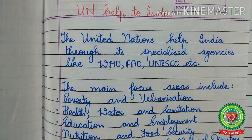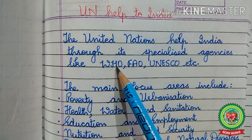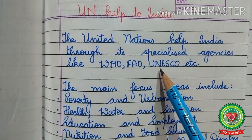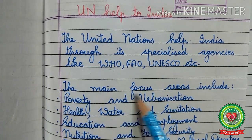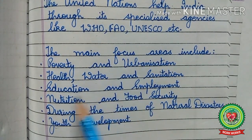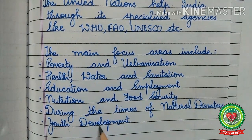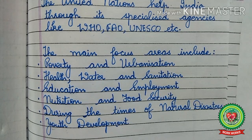The United Nations supports India as the world's largest democracy in the country's ambitious commitments to rapid change and development priorities. The UN helps India through its specialized agencies like WHO — the World Health Organization — FAO — the Food and Agriculture Organization — UNESCO — United Nations Educational, Scientific and Cultural Organization — and others. The main focus areas include poverty and urbanization, health, water and sanitation, education and employment, nutrition and food security, natural disaster response, and youth development.